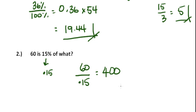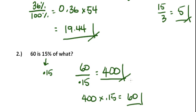You can check this if you want to be sure. 400 times 0.15 should be 60. And when you do that, you find that it is. So this is our answer, and it checks.